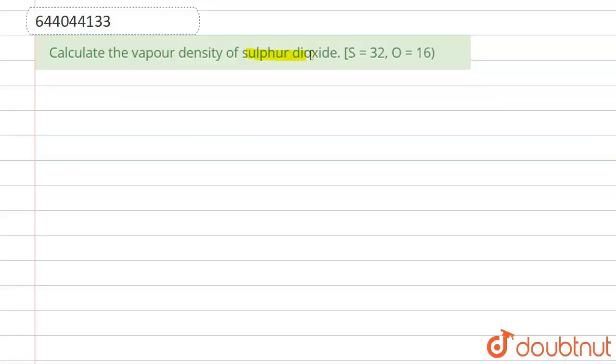Hello everyone, so the question we have is calculate the vapor density of sulfur dioxide. First of all, for vapor density we know that molecular or molar mass is equals to 2 into vapor density.